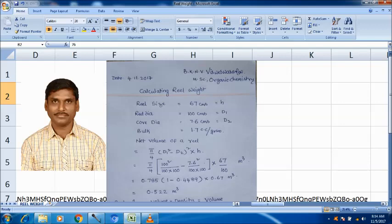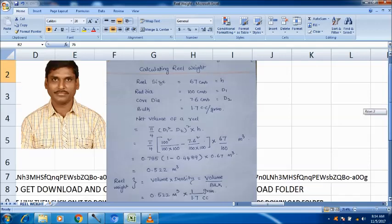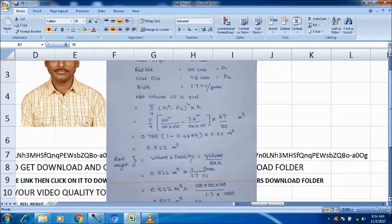That is area part, and multiplied by h or size of the reel 67 by 100 m cube. That is equal to 0.785 into 1 minus 0.4489 into 0.67 m cube. That is equal to 0.522 m cube.